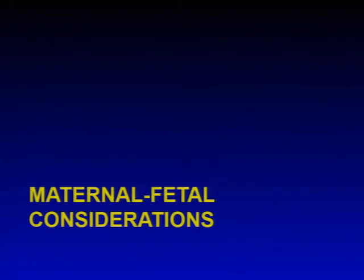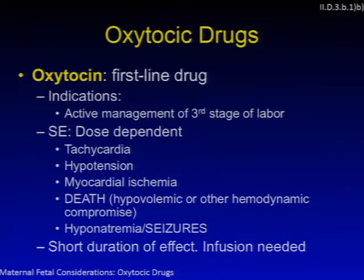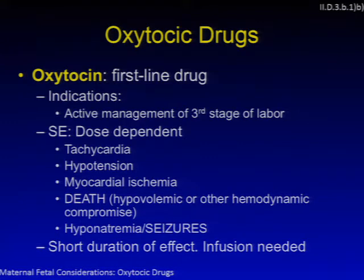Moving on to maternal-fetal considerations: oxytocin is the first-line drug for prophylaxis and treatment of uterine atony after delivery of a third-trimester pregnancy. At term, oxytocin receptors increase in number and affinity. Side effects of exogenous oxytocin are directly related to dose and include tachycardia, hypotension, myocardial ischemia, and even death due to hemodynamic compromise. Oxytocin is structurally similar to vasopressin, so hyponatremia leading to seizures and coma may result when given in high doses with large volumes of IV fluids. It has a short duration of effect and must be administered as an infusion.